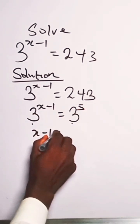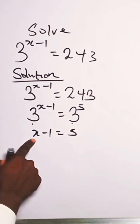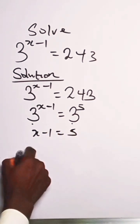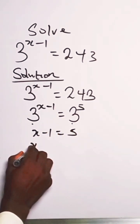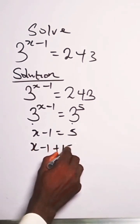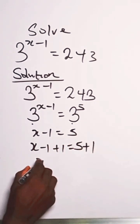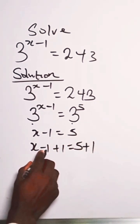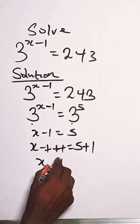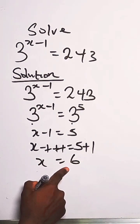So we have x minus 1 equals 5. To get the value of x, we add 1 to both sides of the equation. So we have x minus 1 plus 1 equals 5 plus 1. The minus 1 plus 1 cancels to 0, giving us x equals 6.